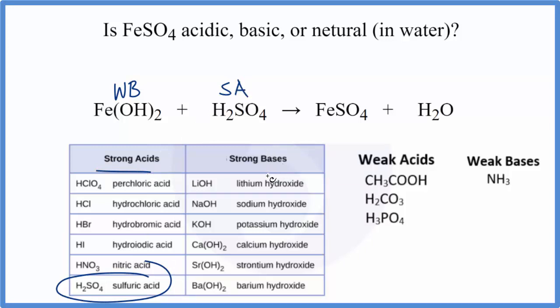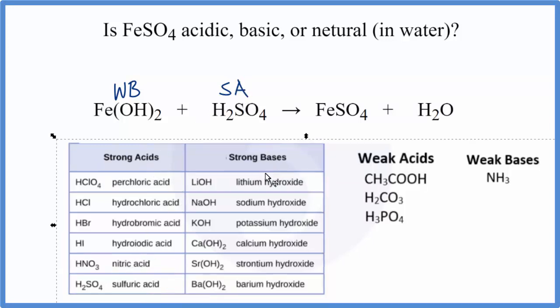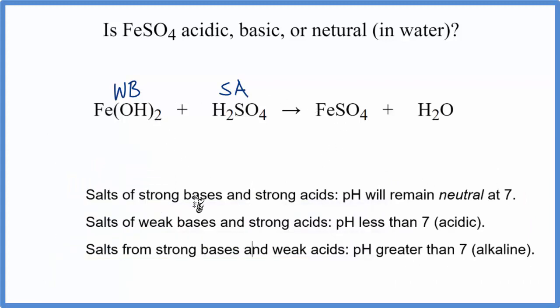Now we can use the rules. So when we have salts of strong bases and strong acids, we'll have a neutral pH. But we have a weak base here. So we have a weak base and then a strong acid. That means when this iron 2 sulfate, this FeSO4, dissolves in water, the pH will be less than 7 and it will be acidic, according to our rules.